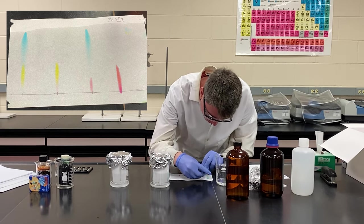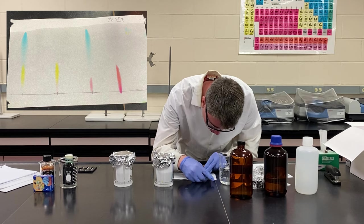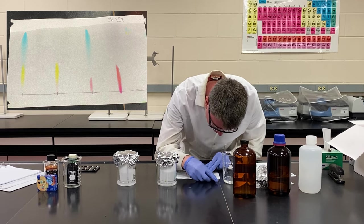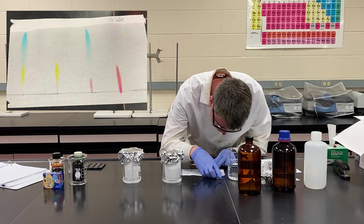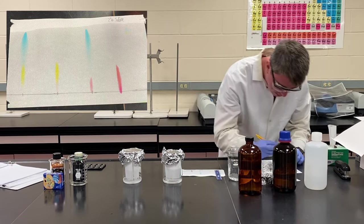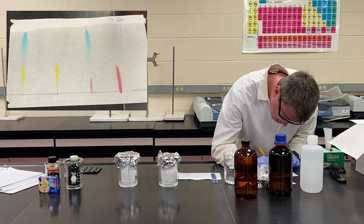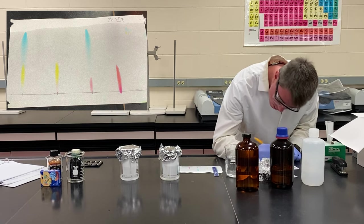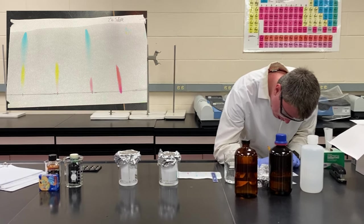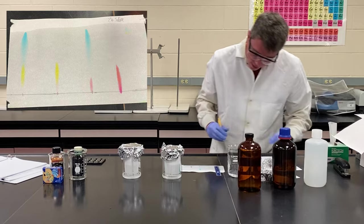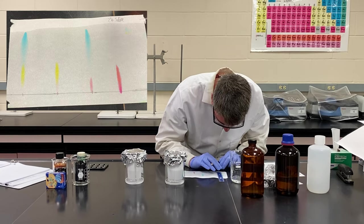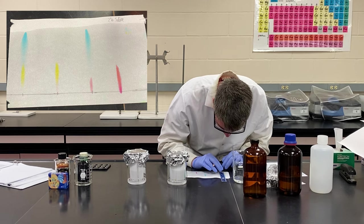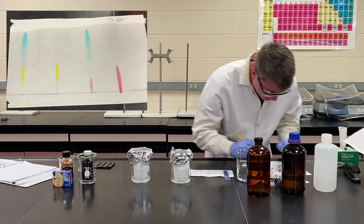So I'm going to measure from the baseline to the front of that dye component, which is about 3.65. And that was for the yellow component of green. The distance traveled by the solvent in this case is about 7.90.